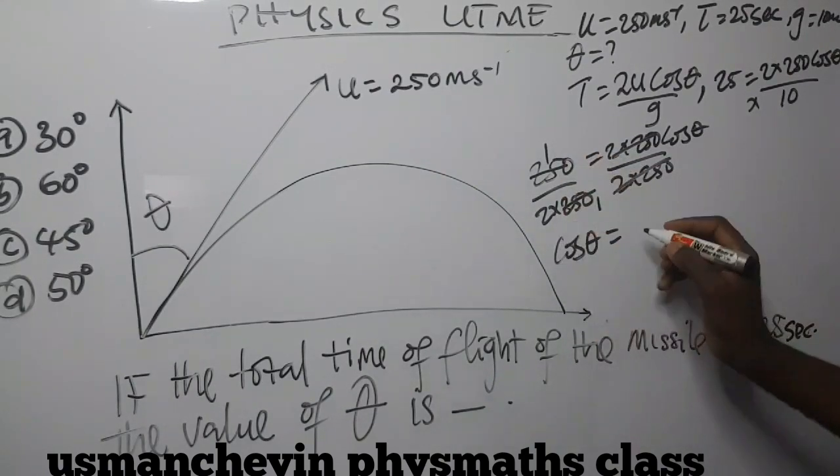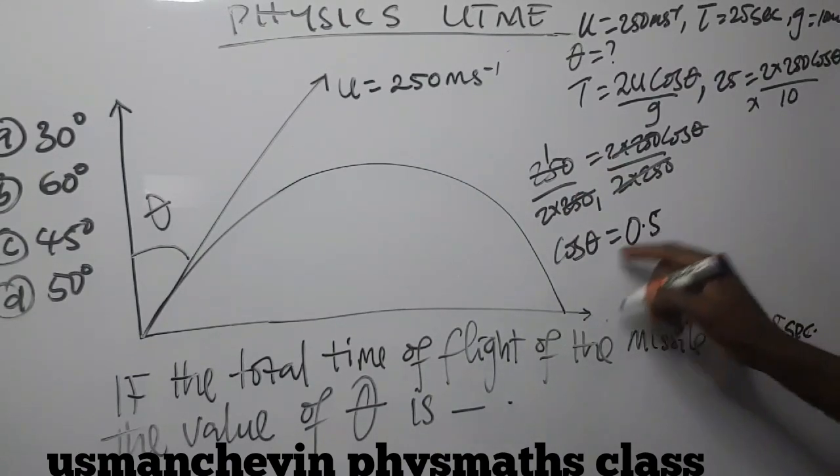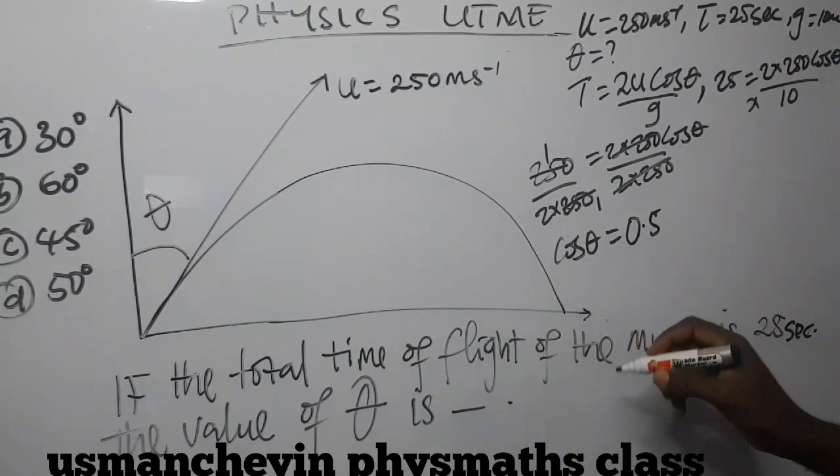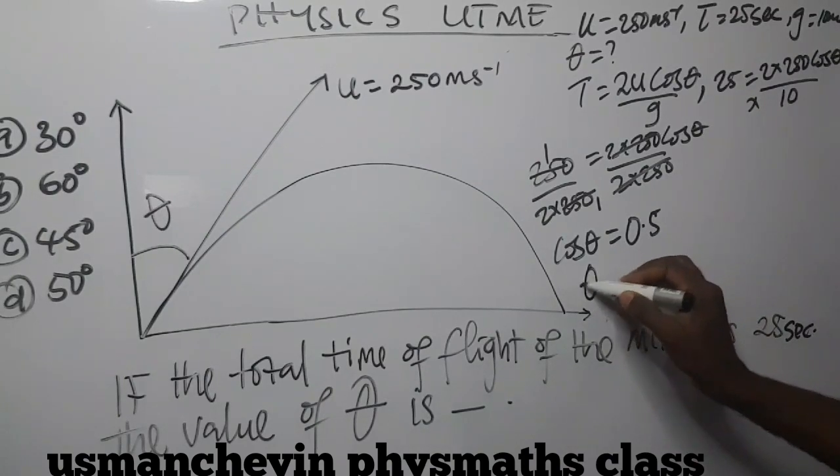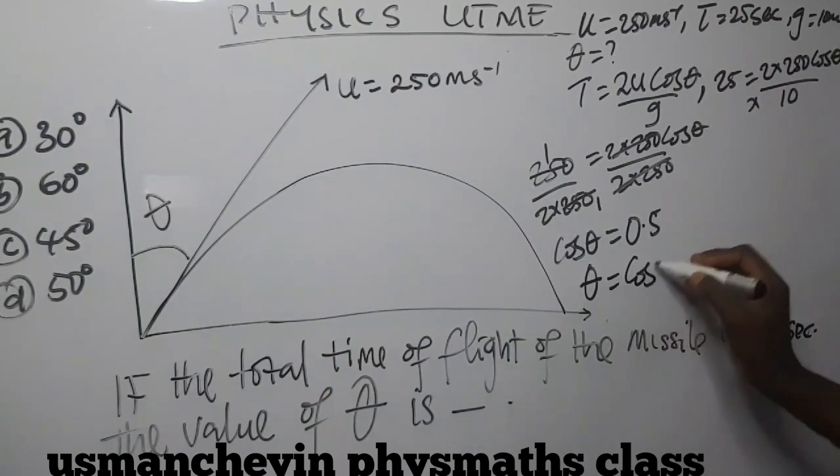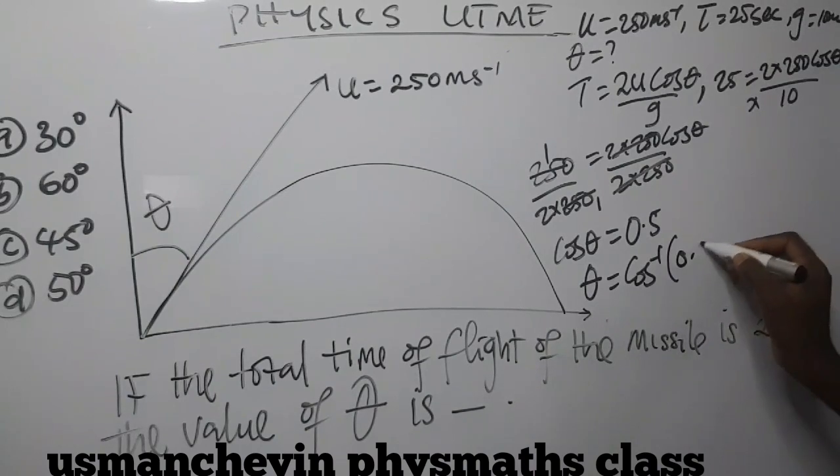1 divided by 2 is the same thing as 0.5. So from here, we need a cos inverse. So we can set our theta is equal to cos inverse of 0.5.